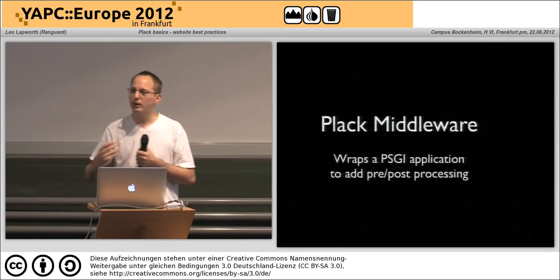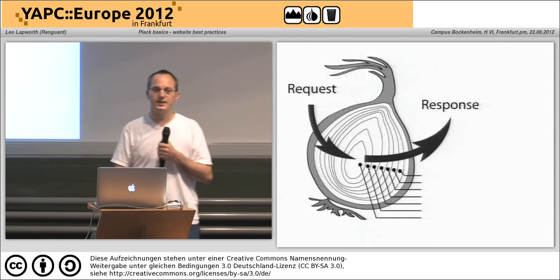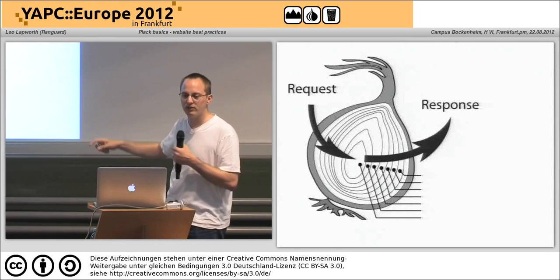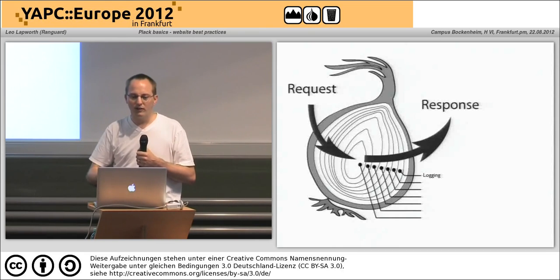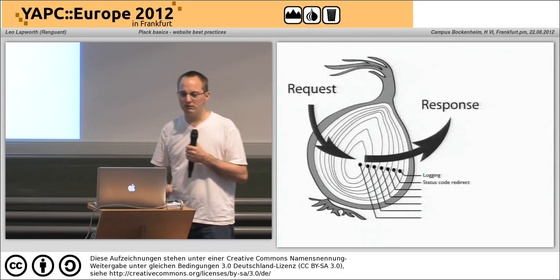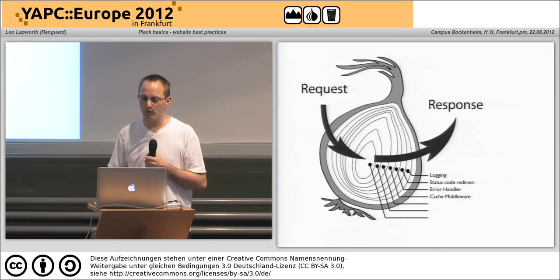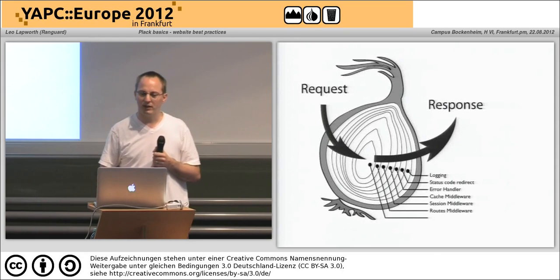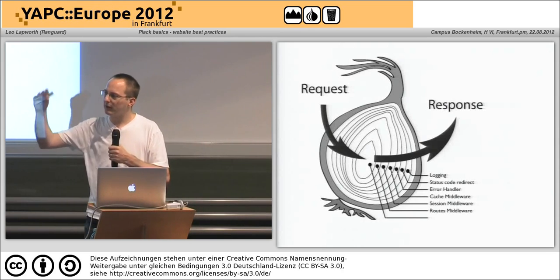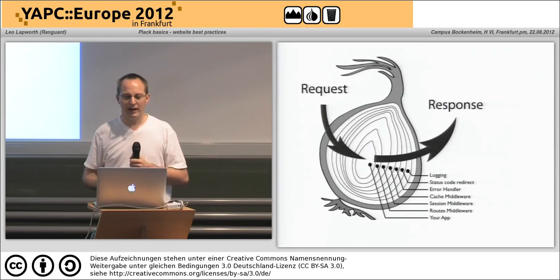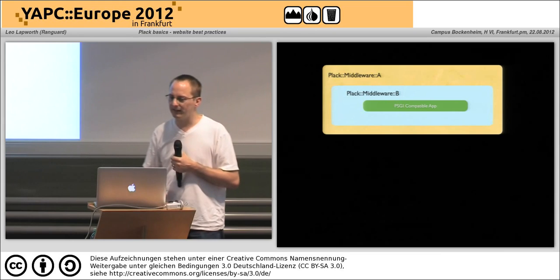How does the middleware fit together? Middleware is for pre-processing of the request and post-processing of the response. As a request comes in it goes through these layers, your application sits in the middle, and then the response comes out. Your outer layer you probably want to do things like logging, maybe a quick redirect or handle some errors, cache some content, do session management — and then in the middle you have your actual application.